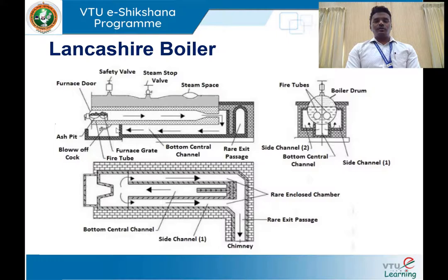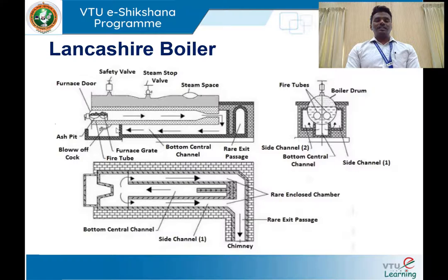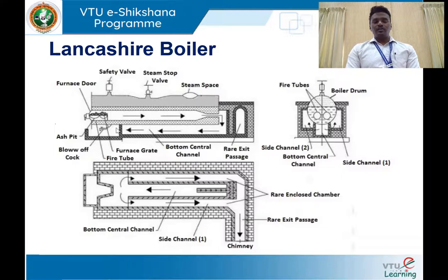The Lancashire boiler basically consists of a boiler shell and two flue tubes. The furnace is placed at one end of the boiler shell — the furnace is a part of the boiler shell. Coal is used as fuel. Once the coal starts burning, it releases hot gases, which are made to pass through the fire tubes from one end to another. The fire tube changes its cross-section nearer to the rear end of the boiler shell to increase the velocity of the hot gases.